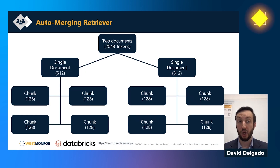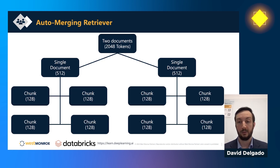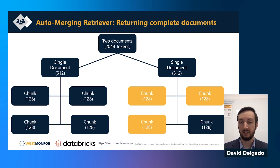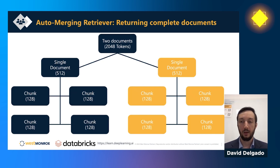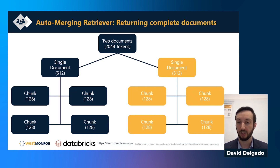The last technique is called auto-merging retrieval. Imagine you have documents that are chunked into smaller pieces, creating a hierarchy that links those chunks together. When a question is posed and the search finds three of four related chunks, because of that hierarchical link, it also returns the fourth chunk and the parent document — under the idea that if three chunks are relevant, the fourth might also provide additional context. Being able to link chunks together provides additional performance improvement to your model.